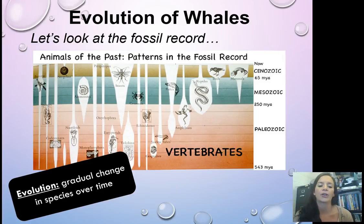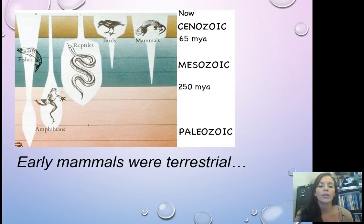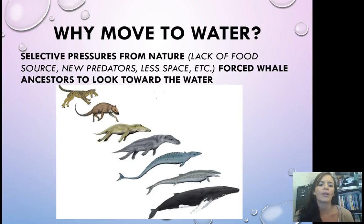So let's look at the fossil record. Evolution is just a gradual change in species over time — gradual being the key word. If we look at the fossil record, you'll see that vertebrates have been around for a long time, and as we move up you'll see all the different animals of the past. Whales are mammals, not fish. The issue is that early mammals were terrestrial, meaning they lived on land — they had legs. The idea is that the ancestors of whales used to live on land and moved into the water due to selective pressures like needing a new food source, new predators on land, or less space.